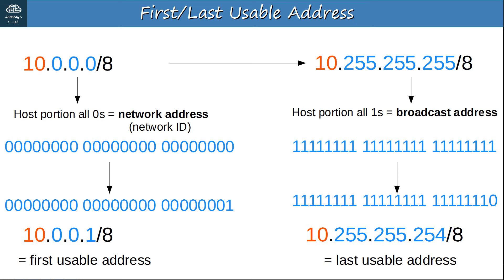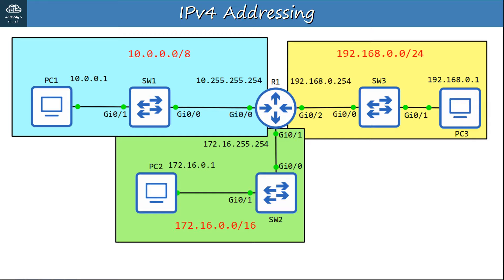Hopefully you understand both how to calculate the number of usable addresses in a network, and the first and last usable address in a network. We covered this material in the last video, but I wanted to make it clear. Now let's move on to actually configuring a Cisco router with IP addresses. Here's a small network put together in GNS3, with three small networks connected to a single router, R1. Keep in mind that it's not really realistic to have only a single PC connected to each switch — in a real network there will be many more hosts.